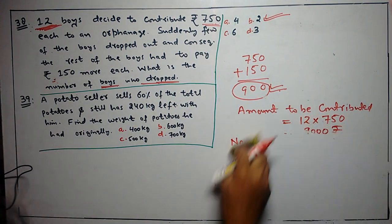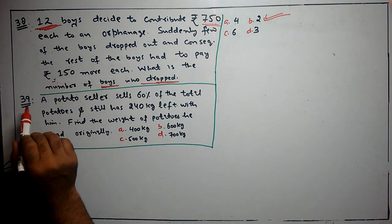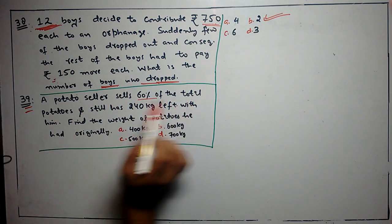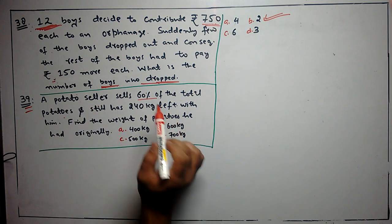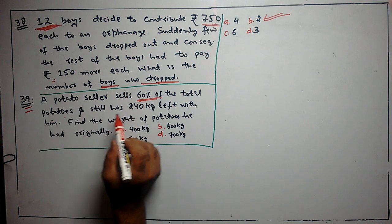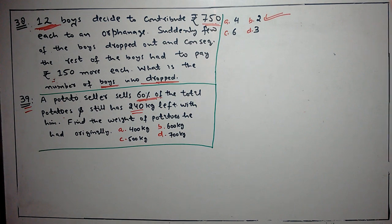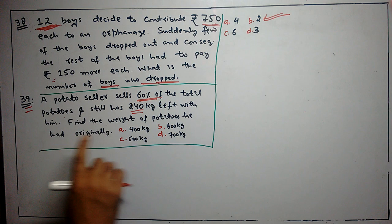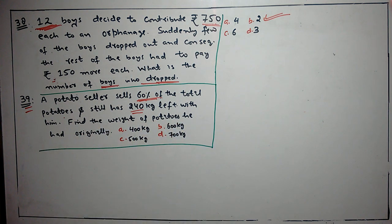Next question is simple. What is asked in the 39th question? A potato seller sells 60% of the total potatoes and still has 240 kg left. After selling 60%, it has 240 kg left. Find the weight of potatoes he had originally.